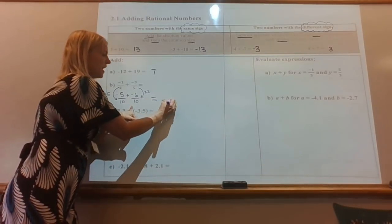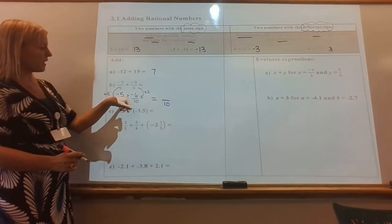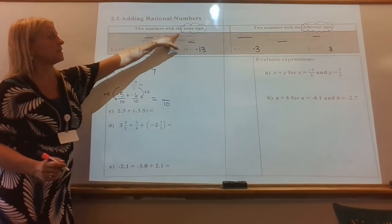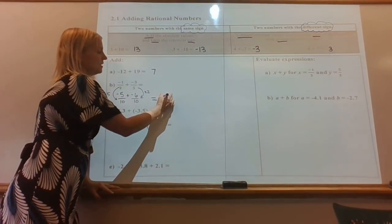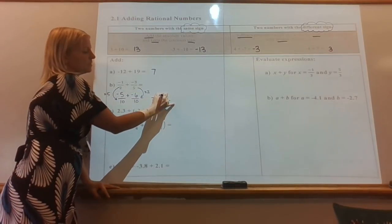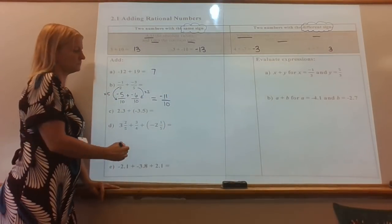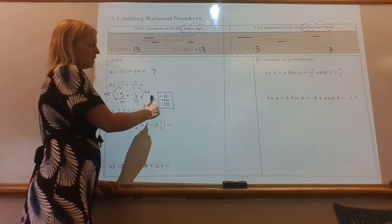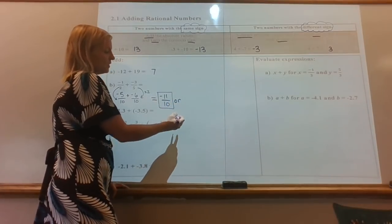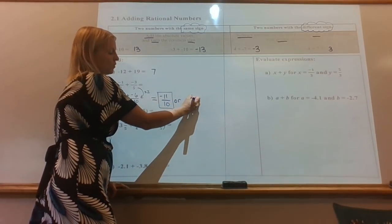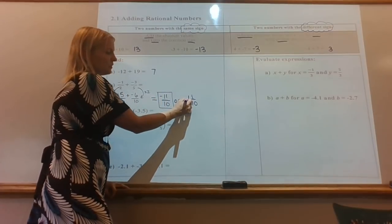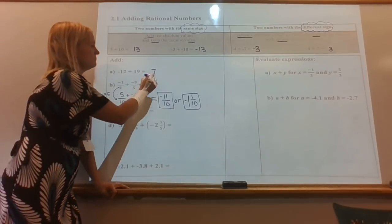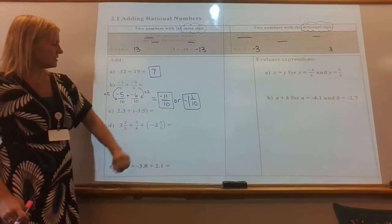Now I can add them — keep that denominator. Are they the same or different? They're both negative, so that's the same sign — I'm going to add them. Five plus six is eleven, and I keep the common sign, which is negative, so negative eleven over ten. Written as a mixed number: 10 goes into 11 one time with one left over — and don't forget your negative. The negative is always in front of the number, so it's negative 1 and one-tenth.